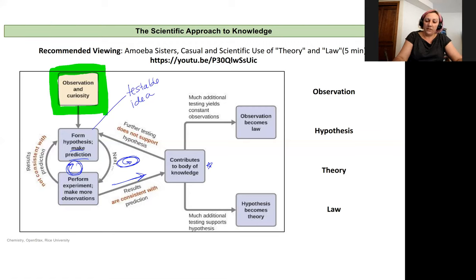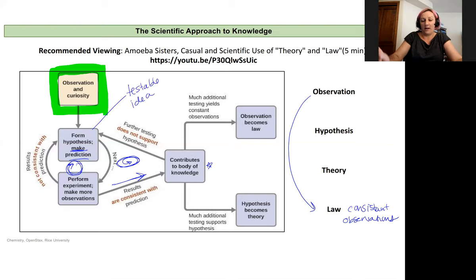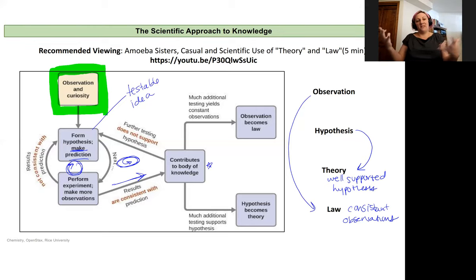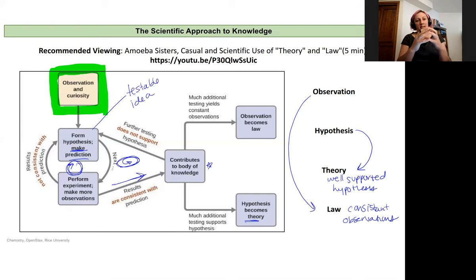Our observations are going to lead to laws. Laws are going to be consistent observations — if we observe the same thing over and over and over, it becomes a law of nature. Whereas our hypothesis, our testable idea, as we make more and more observations that support it, becomes a theory. A theory is a well-supported hypothesis. As we build up a large body of knowledge supporting this testable explanation of something we see in the natural world, we develop a theory. Hypotheses, when well-supported with evidence, become theories, and observations seen consistently become a law.